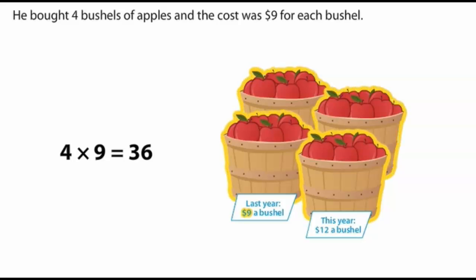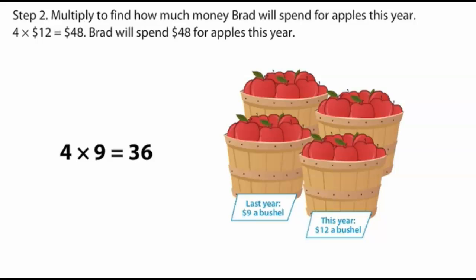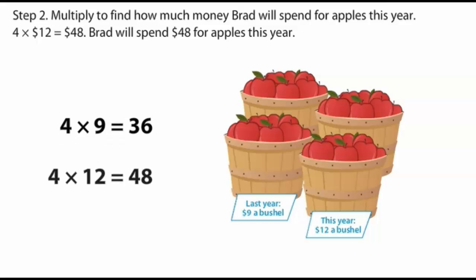Step two: multiply to find how much money Brad will spend for apples this year. Four times twelve dollars equals forty-eight dollars. Brad will spend forty-eight dollars for apples this year.